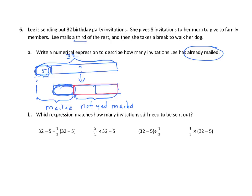These are fairly complex expressions, so consider them very carefully before choosing. You might want to actually solve the problem to find the answer. To find what's not yet mailed: take 32 minus 5, then look for two-thirds of that remainder. Don't jump on the first thing that looks correct — work it through and think it out carefully.